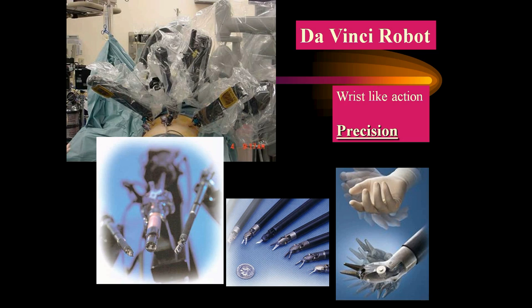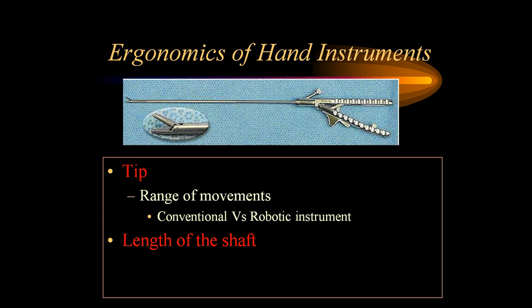The Da Vinci robotic hand instruments are unique in that they have a wrist-like action, so we can precisely perform division, dissection, and suturing. Regarding instrument length, most average hand instruments are 30 centimeters long, but in pediatrics we could have a shorter version, and for bariatric surgery one may opt for 45-centimeter hand instruments. We should know the importance of having the right length instrument for the right situation.